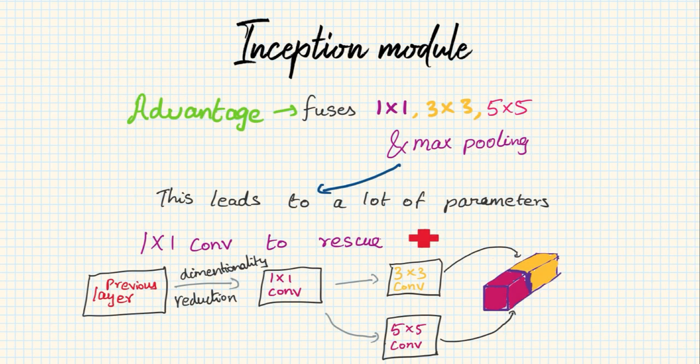Let's look into some of the examples where one by one convolution is used. First, let's look into the inception module where one by one convolution plays a very crucial role. I'm not going to really talk much about what an inception module is, but to give you an idea it fuses different types of filters.